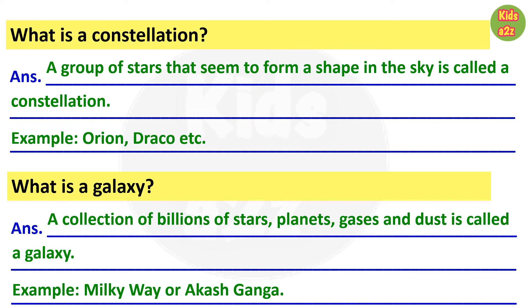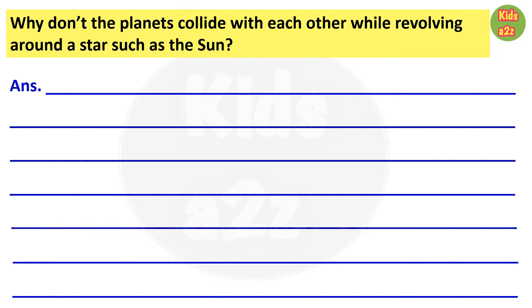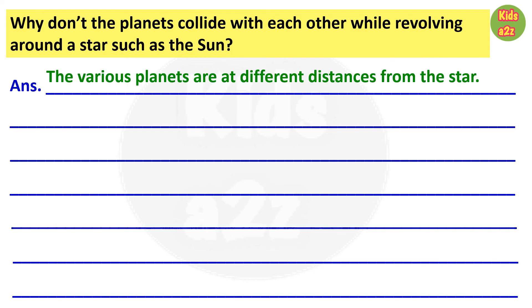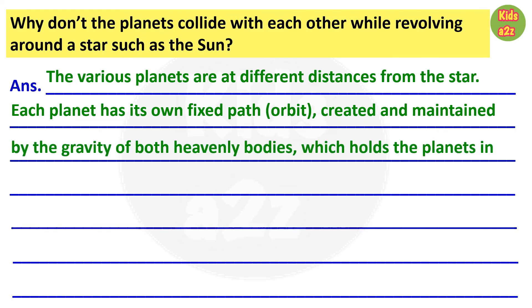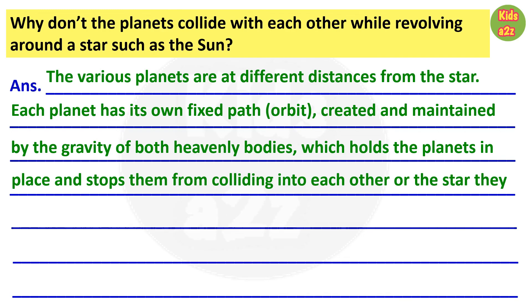Next question: why don't the planets collide with each other while revolving around a star such as the Sun? Answer: the various planets are at different distances from the star. Each planet has its own fixed path, that is an orbit, created and maintained by the gravity of both heavenly bodies, which holds the planets in place and stops them from colliding into each other or the star they are revolving around.